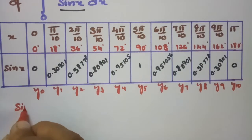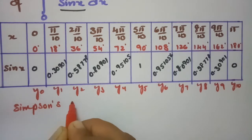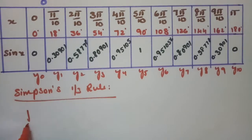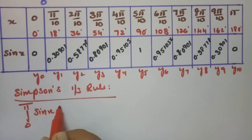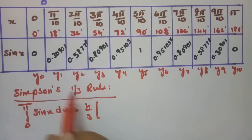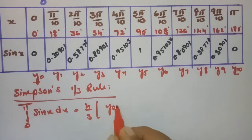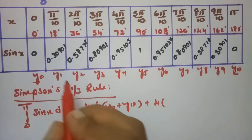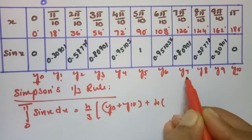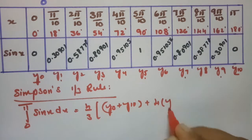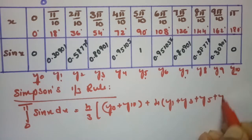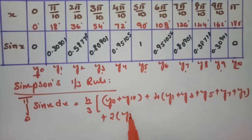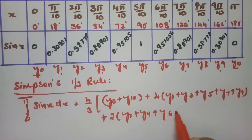According to Simpson's 1/3 rule, the formula for the integral 0 to π of sin x dx is: h/3 times [(y0 + y10) + 4(y1 + y3 + y5 + y7 + y9) + 2(y2 + y4 + y6 + y8)], where h = π/10.